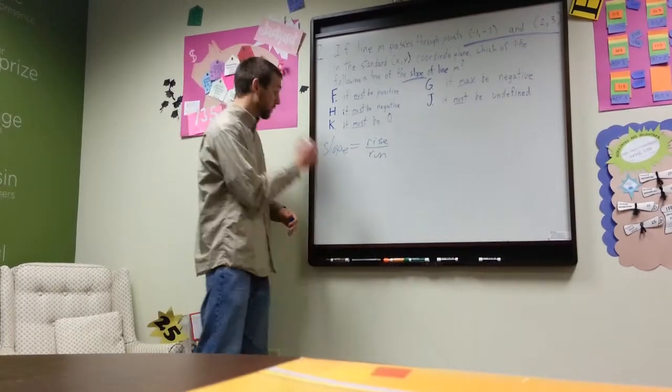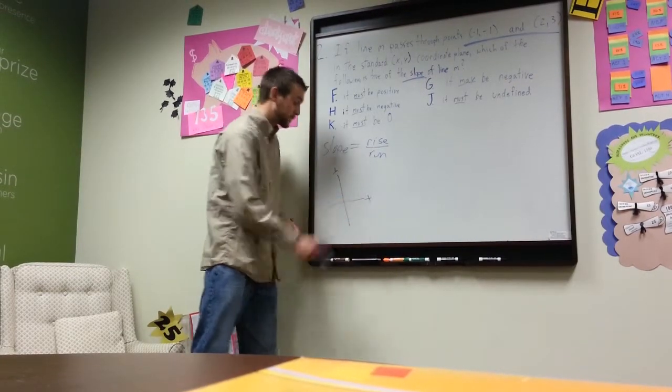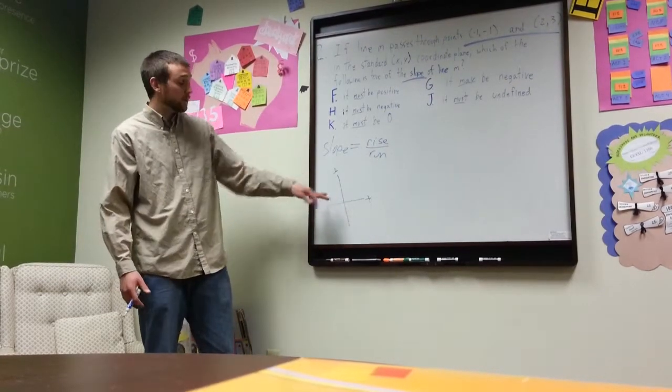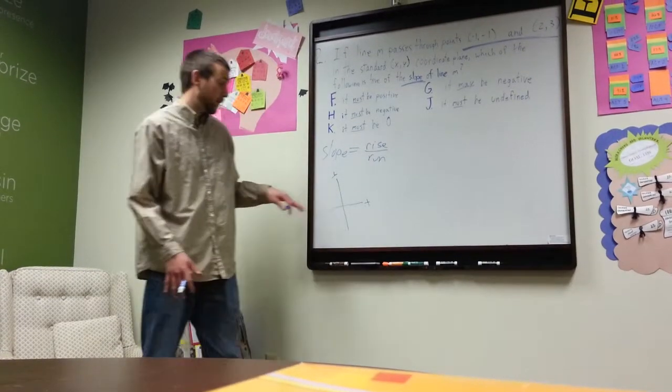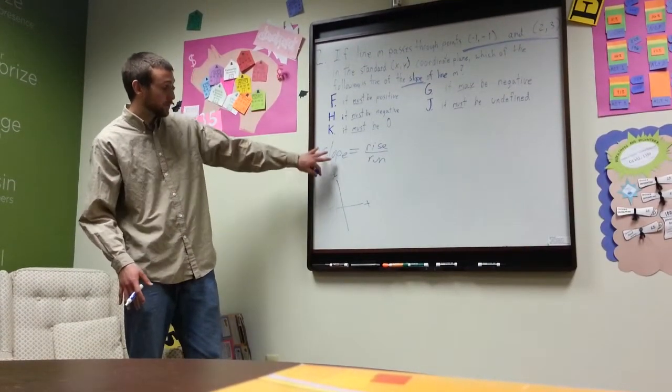So how is that going to translate into the information we have right here? Well, let's think about the x, y coordinates. Is there a y-axis? Is there a x-axis? So x represents the horizontal distance on the coordinate plane, and y represents the vertical distance.